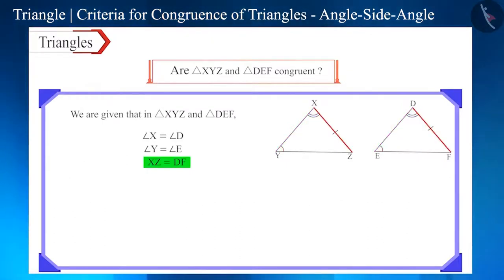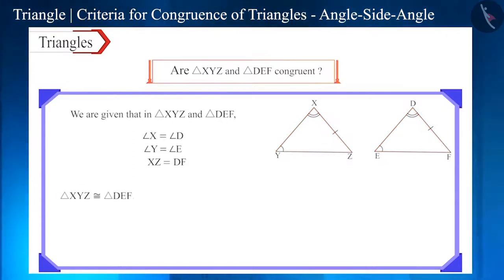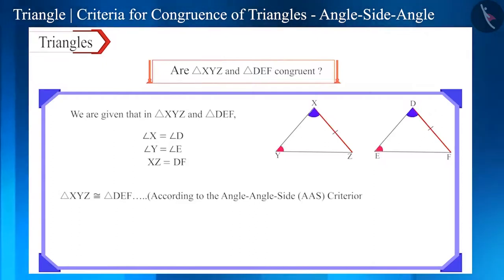And this side is not the side between these two angles. Therefore, these triangles are not congruent according to the ASA congruence rule for triangles. But these two triangles are congruent according to the AAS congruence rule.